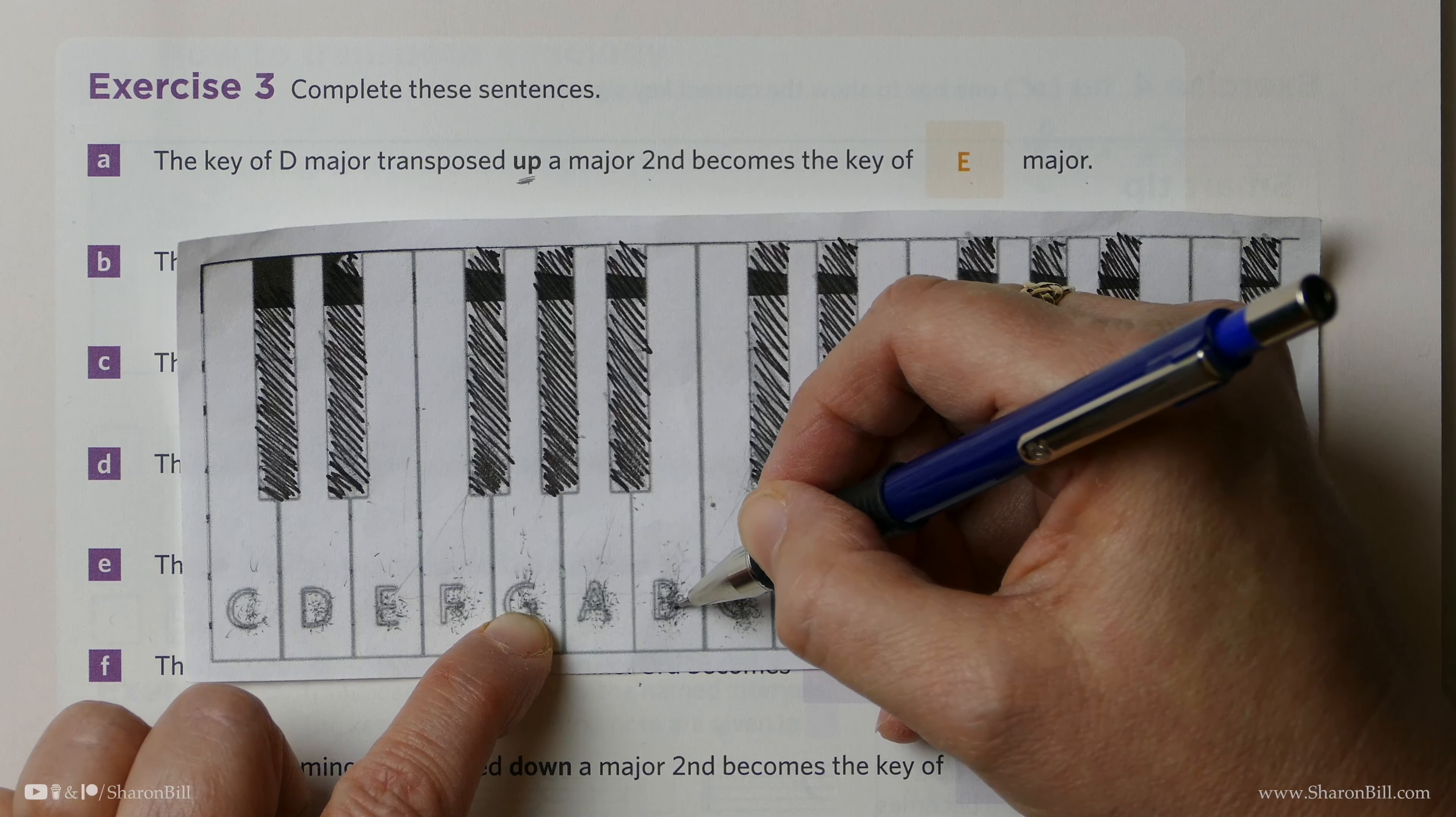The key of G major transposed down a minor 3rd becomes, so let's go down 3 from G, 1 to 3. So we've got to E, and now we need to know, is that a major or a minor 3rd? And we always count the lowest note as the tonic of the interval that we're working from, and we know that E major should have G sharp, so that would be a major 3rd. G natural is the minor 3rd, so E to G is a minor 3rd. And so from G down a minor 3rd, we go to the key of E, and so we've gone from G major to E major.